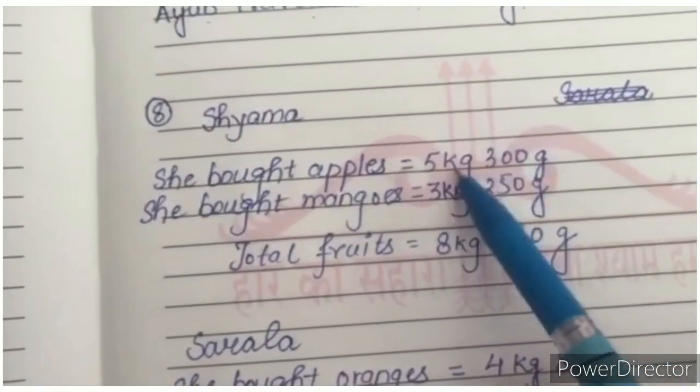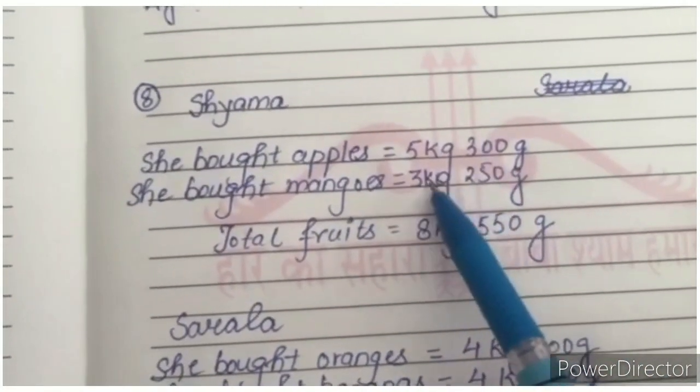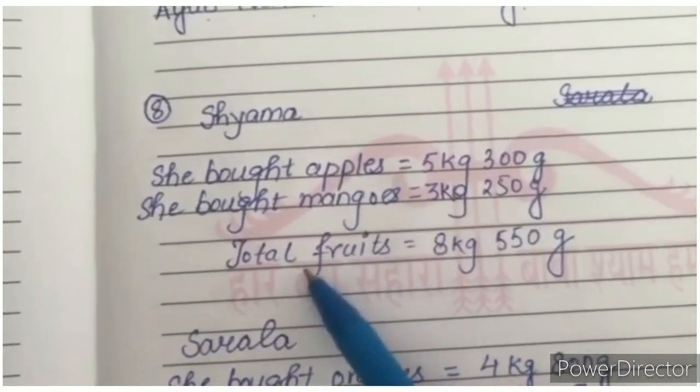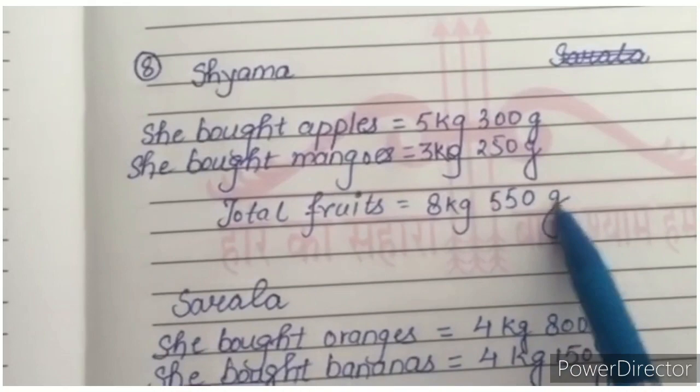She bought apples. How much? 5 kg 300 grams. Then she bought mangoes. How much? 3 kg 250 grams. Total fruit. How much total fruit she has purchased? 8 kg 550 grams.